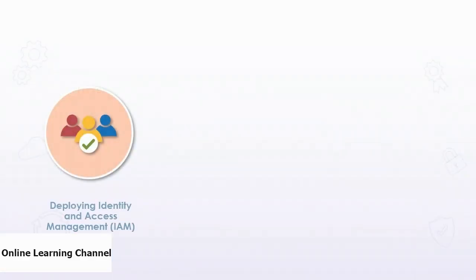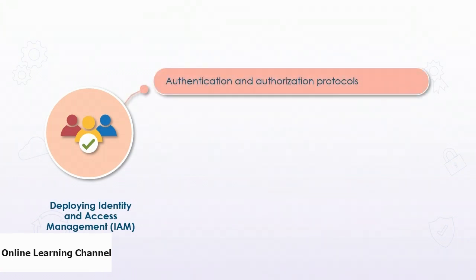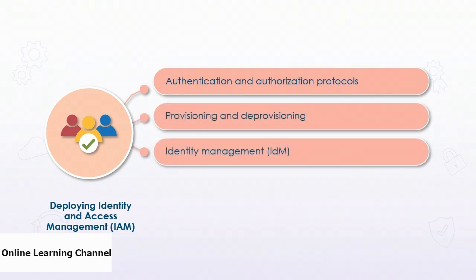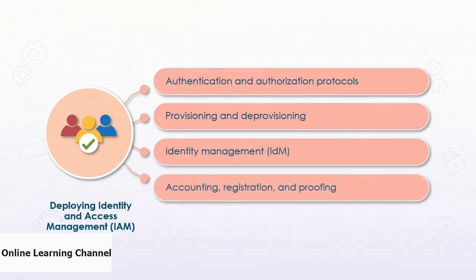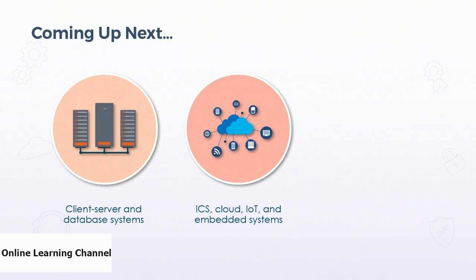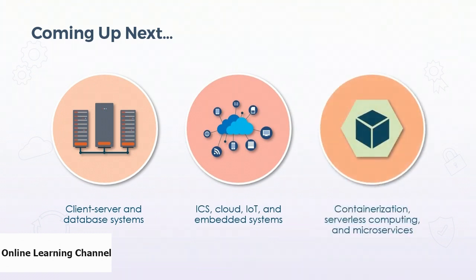In this course, Deploying Identity and Access Management (IAM), you learned about authentication and authorization protocols, provisioning and deprovisioning, identity management (IDM), and accounting, registration, and proofing. Coming up in the next course, we'll explore client, server, and database systems, ICS, cloud, IoT, and embedded systems, and containerization, serverless computing, and microservices.